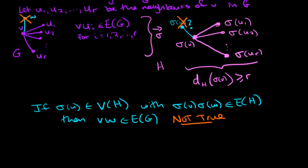So that means we conclude that the degree in the graph H of the vertex sigma V is also equal to R. And thus, V gets mapped to sigma of V, which has the same degree as V.